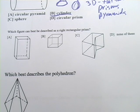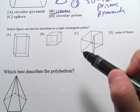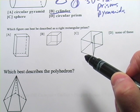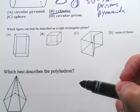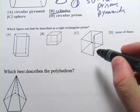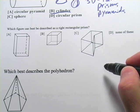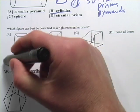Let's look at this next one. It says, which figure can best be described as a right rectangular prism? So a right rectangular prism is going to be this creature right here. This is a cube. This is some other kind of complex prism. It's got a concave side. So our answer here is going to be A.